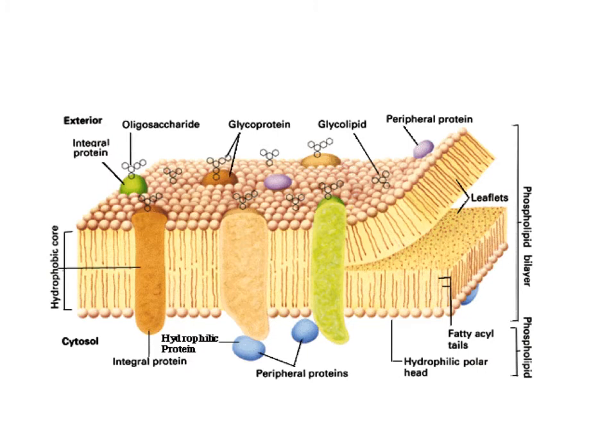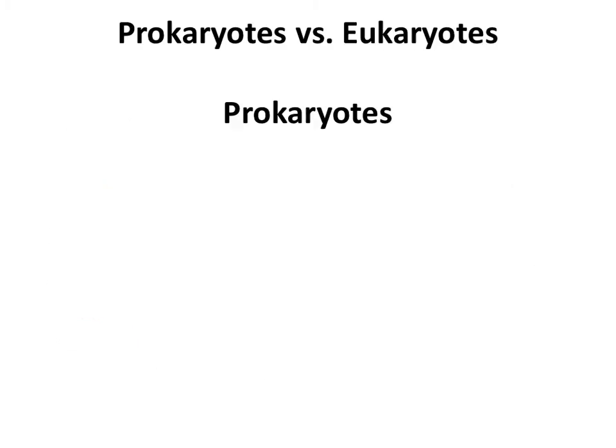Electron microscopes also allow us to look at organelles, and there are other methods to fractionate cells to look at individual organelles underneath the scope. Cells are the basic structural and functional units of every organism. When we talk about cells, we can talk about two distinct types: prokaryotic cells and eukaryotic cells. The major difference between them is the location of the DNA. In the eukaryotic cell, we find the DNA within the nucleus. In the prokaryotic cell, we find it in an area referred to as the nucleoid, which is not membrane-enclosed.